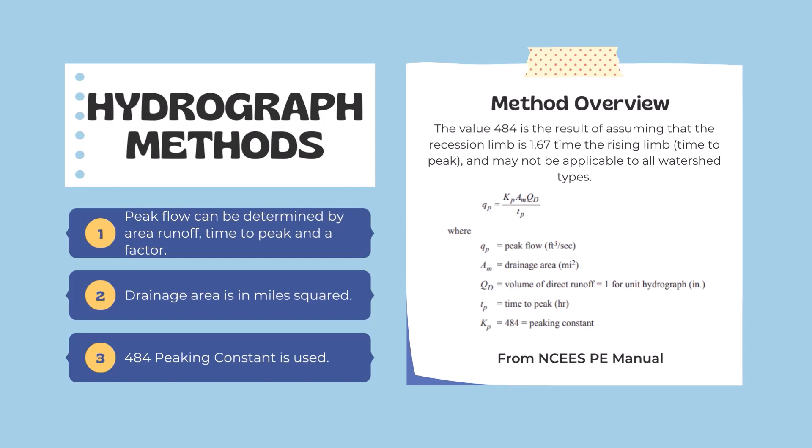If we look at this equation, the peak flow in CFS equals 484 peaking constant times the drainage area in square miles times the volume of direct runoff. We're going to be using one for unit hydrograph in inches.